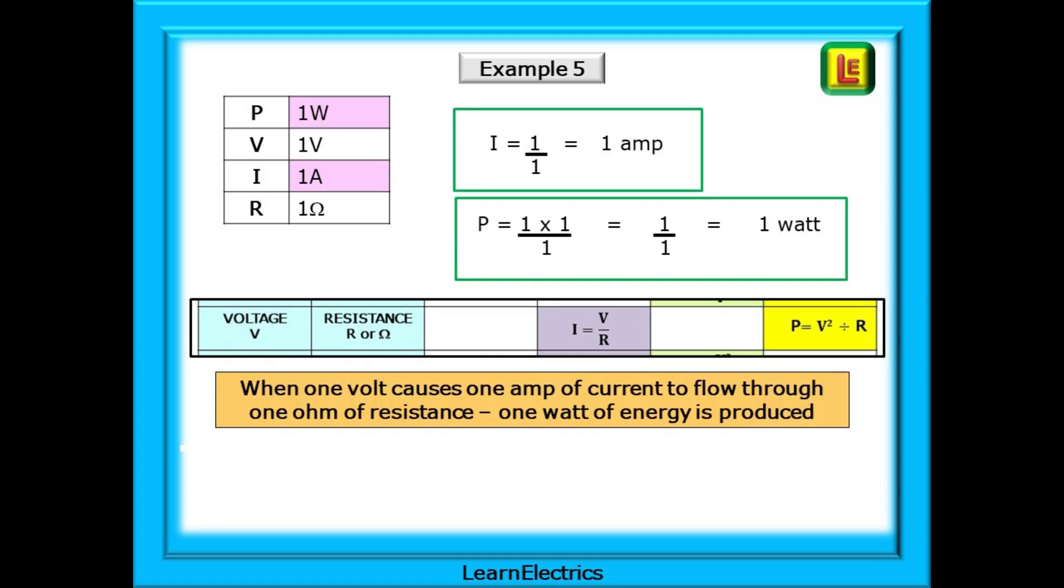Using the matrix, the current I is 1 amp and the power P is 1 watt. It's useful to know that when 1 volt causes 1 amp of current to flow through 1 ohm of resistance, then 1 watt of energy or power is produced.